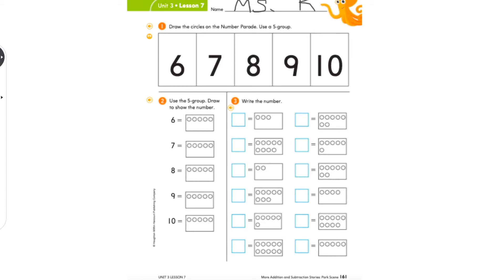So first it says draw the circles on the number parade. We've already done this number parade. It says use a five group. And how many are in a five group? Oh, it's right in the name. It's only five. So at the top, we're gonna draw five circles. Count with me. One, two, three, four, five. Now I have to keep going because is this the number five right here you see? No. It's the number six. So if I have five in my head, let's keep counting. Five, six. I can stop because that's the number. So now let's do that five group again. Remember, we only need five on the top. One, two, three, four, five. Let's keep counting down below. Six, seven.